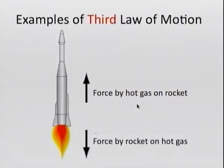Let me show you a few more examples. Consider a rocket. If you study the forces that make a rocket fly in space, you have the force by the hot gas on the rocket, and you have the force by the rocket on the hot gas. Again, notice how they are the same size, in opposite directions, and one cannot happen without the other.